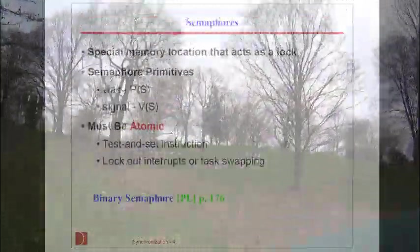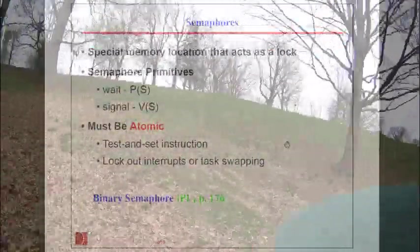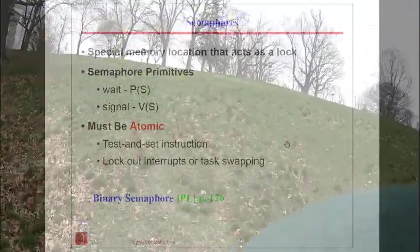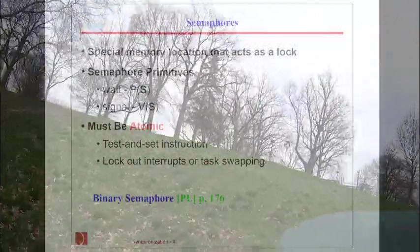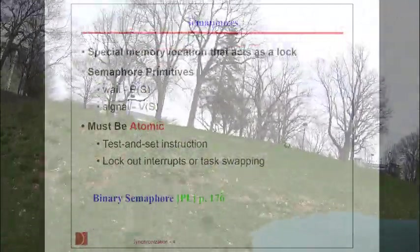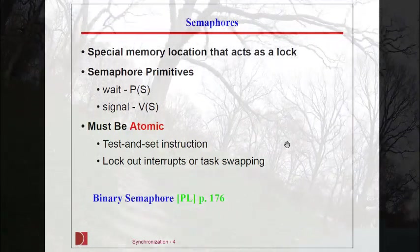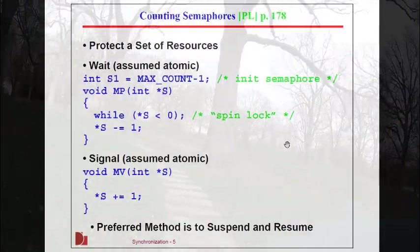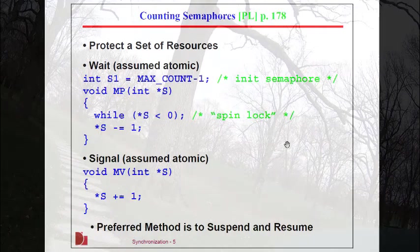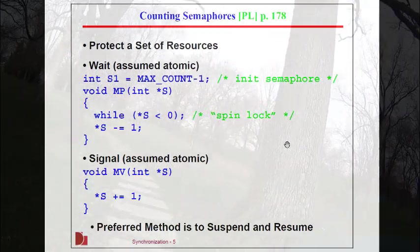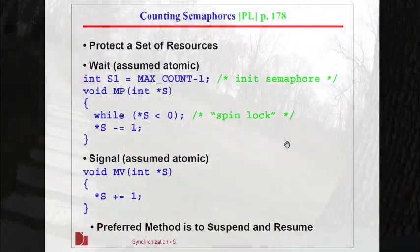The idea of a binary semaphore is if it's just set to true or false, like our example, it's just protecting a single instance of a single resource. Counting semaphores just allow for multiple access to multiple resources. Imagine, for example, a bank of printers.